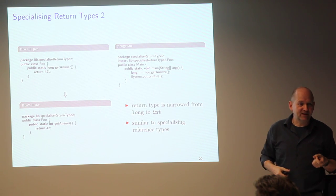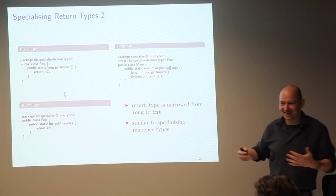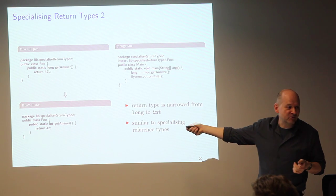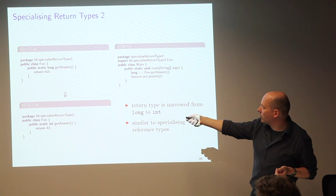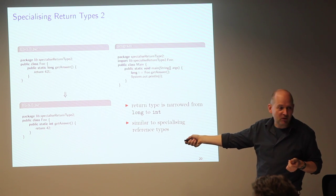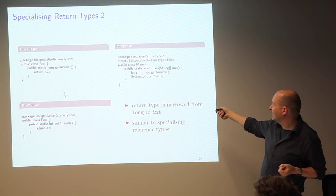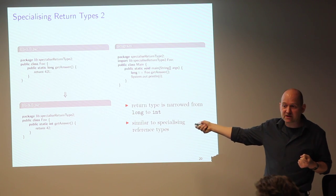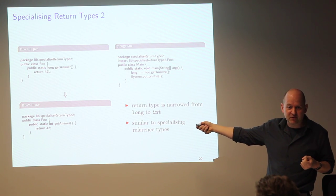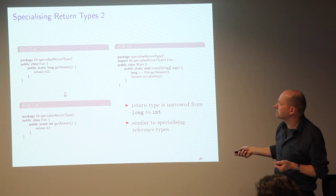A similar example with primitives: we return a long and narrow the return type to an int. Again, no source problem, but it breaks binary compatibility because the method descriptor changes. It's really just the primitive counterpart of what we saw before.